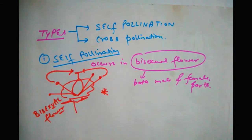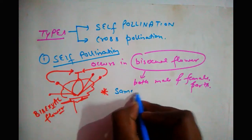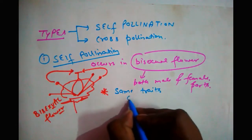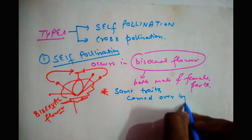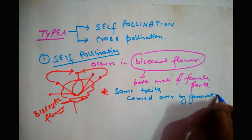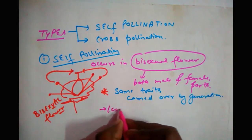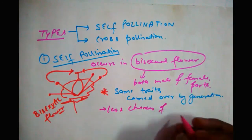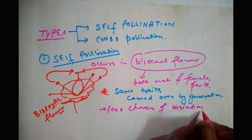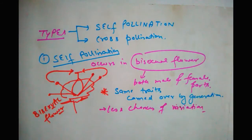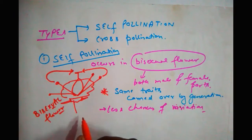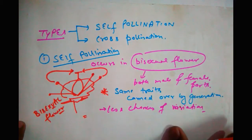This kind of pollination doesn't support evolution — you can say that variations and selections don't take place in self-pollination. Because the same traits are being transferred and carried out by generations, there are less chances of variations. The same characteristics and same properties will be transferred from one generation to another — that's why it's self-pollination.